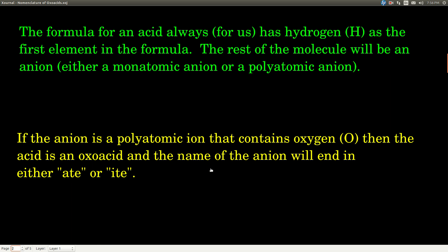You'll always see the formula, for us anyway, starting with H. And that's how you know, when you look at the formula, that a compound is an acid. And in an acid, the rest of the molecule after the hydrogen will be an anion. It can be either a monatomic anion or a polyatomic anion.